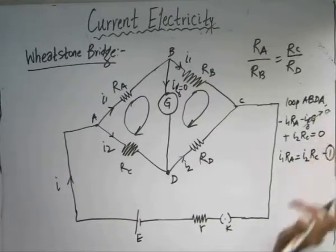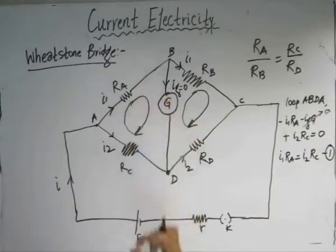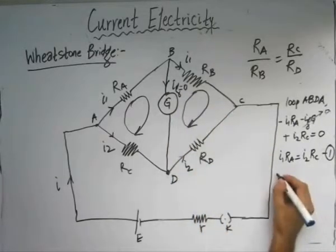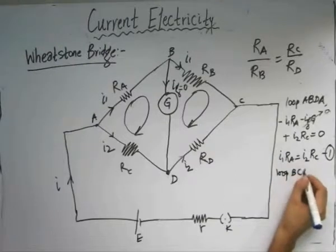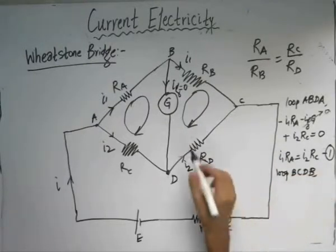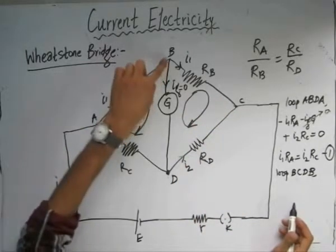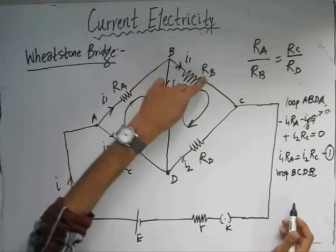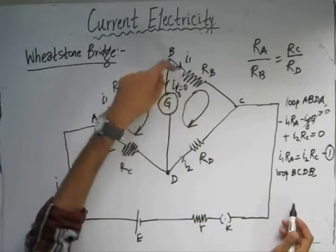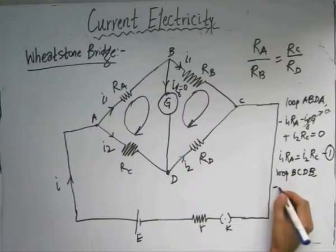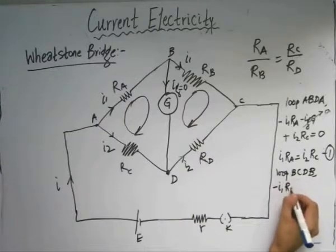This is equation number one, obtained by applying KVL in the loop ABDA. Now similarly we apply KVL in the other loop BCDB, with the clockwise traversal direction assumed. Starting from point B, the first element is resistance Rb, and the direction of current and loop both coincide, so we get a negative potential: minus I1·Rb.